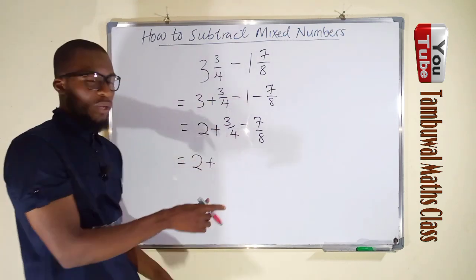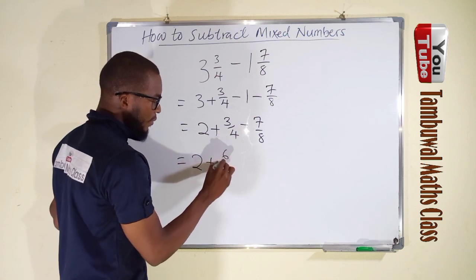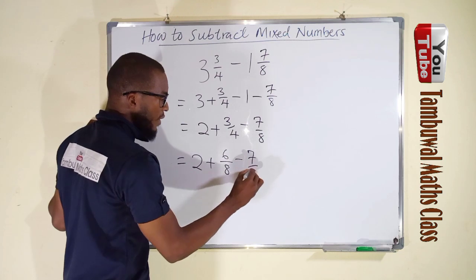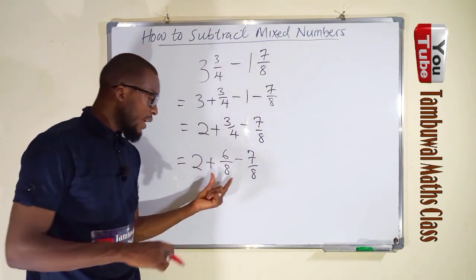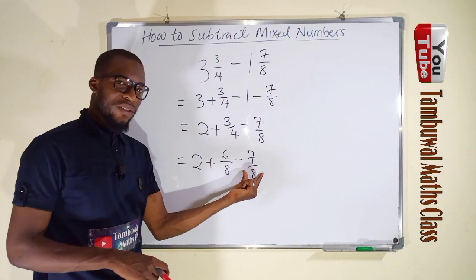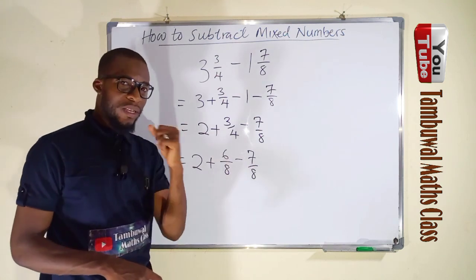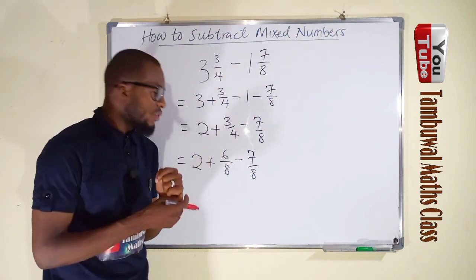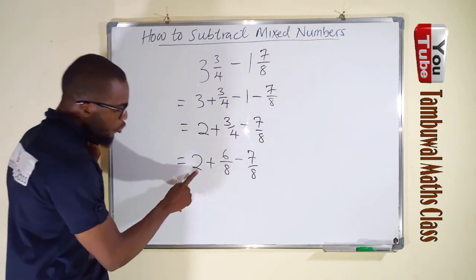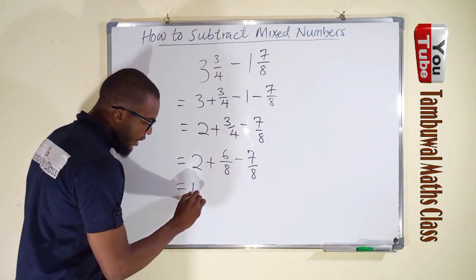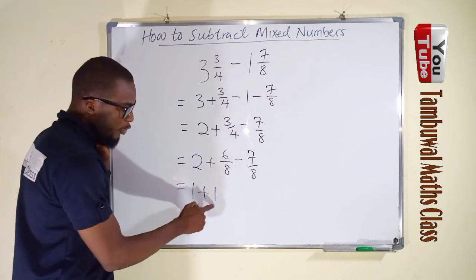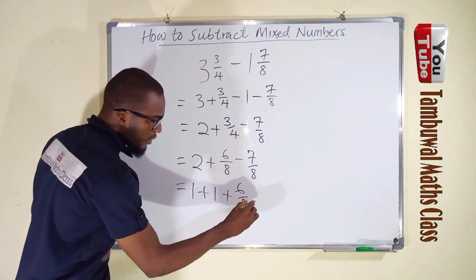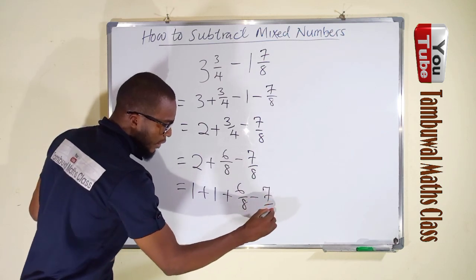We find the common denominator. Multiplying 4 by 2 gives 8, so we multiply the top and bottom of 3/4 by 2: 2 times 3 is 6, over 2 times 4 is 8, giving 6/8. Now we have 2 plus 6/8 minus 7/8. Since 6/8 is less than 7/8, subtracting would give a negative result, so since we have the whole number part, we borrow 1. We write 2 as 1 plus 1, still with 6/8 minus 7/8.